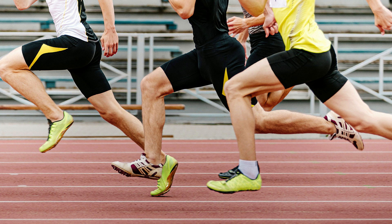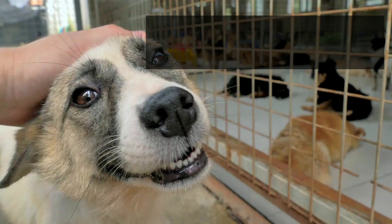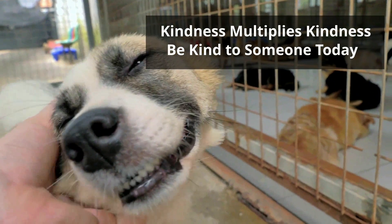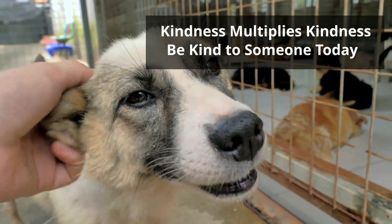So when you train consistently, these three areas — easy runs, tempo runs, and anaerobic runs — will help you become a faster runner. Thanks for watching, and remember, kindness multiplies kindness. Be kind to someone today.